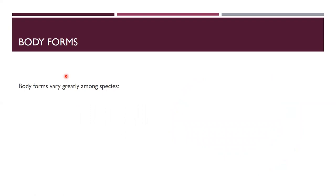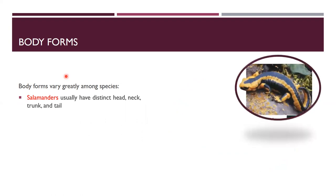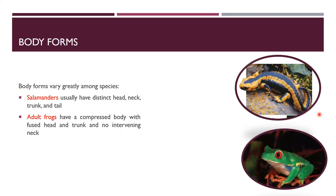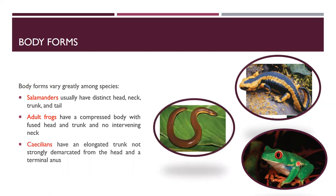Body forms vary greatly among species. Salamanders have distinct head, neck, trunk and tail. Adult frogs have a compressed body with fused head and neck, and a trunk. Caecilians have an elongated trunk that is not strongly demarcated from the head, and a terminal anus is also present.